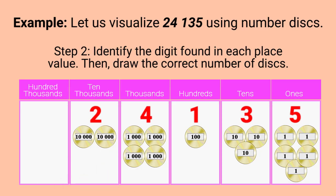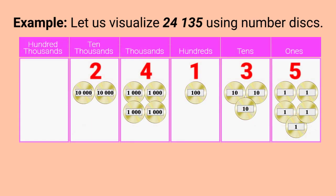So, 24,135 means 2 10,000s plus 4 1000s plus 1 100s plus 3 10s plus 5 1s.